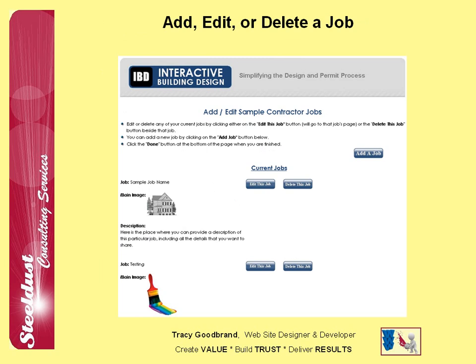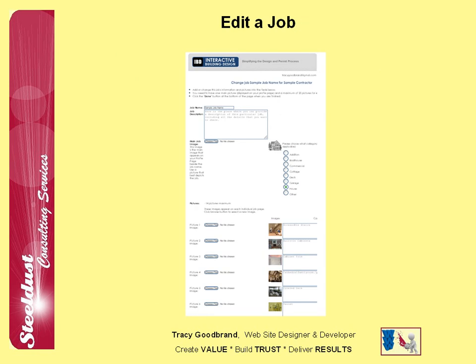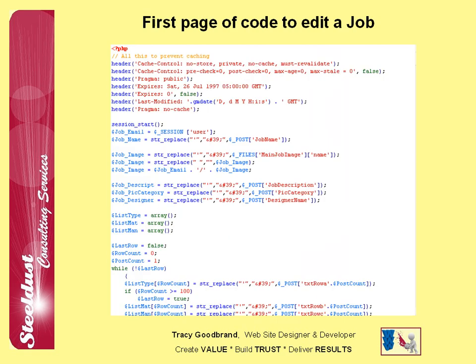A member can add a new job to their profile page, edit an existing job, or delete a job that they have featured. This is all done in the background using PHP to access the database for each individual member's job and all the information and images stored on the server. When a member edits a job, he has the option to change the name, the job description, the main job image, the category that particular main job image falls into, and any of the other 20 images they can upload. This is the screen that the member sees to edit or add a job, and this is a screenshot of the first page of many that does all the work in the background. There's a lot of coding to make all of this work.